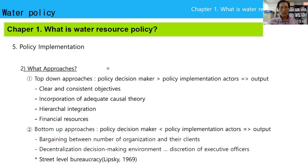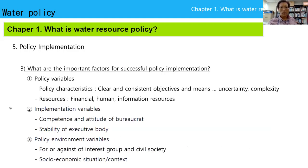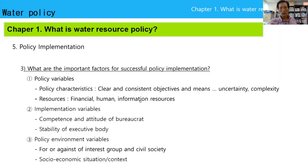Lipsky (1969) emphasized street-level bureaucracy — executive officers are very important in implementation theories. What are the important factors for successful policy implementation? First, policy variables: clear and consistent objectives and means — if uncertain, complex, or unclear, it has an adverse impact on performance. Resources — financial, human, and information resources — are very important for performance and implementation.